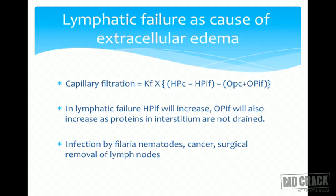Another important cause is lymphatic failure or obstruction. If lymphatics are blocked, two things result: first, interstitial fluid is not drained, so the normally negative interstitial hydrostatic pressure turns positive, opposing filtration. Second, plasma proteins that were filtered into the interstitium and normally removed by lymphatics now remain, exerting osmotic pressure and causing more filtration. Both the accumulation of plasma proteins and the positive hydrostatic pressure contribute to edema.